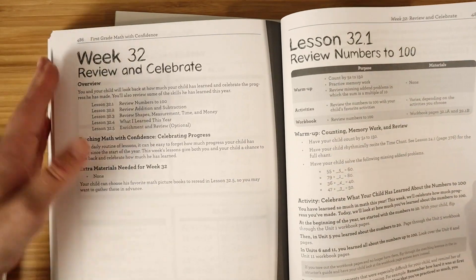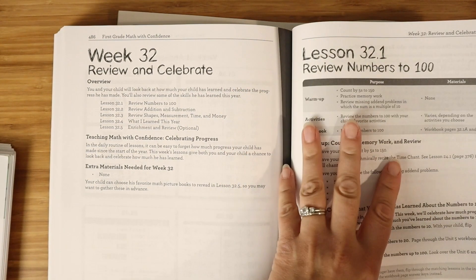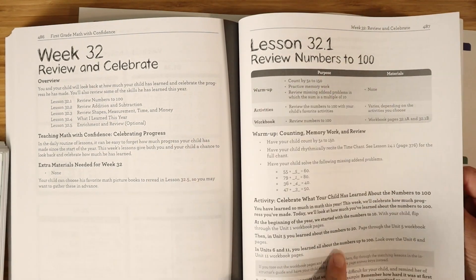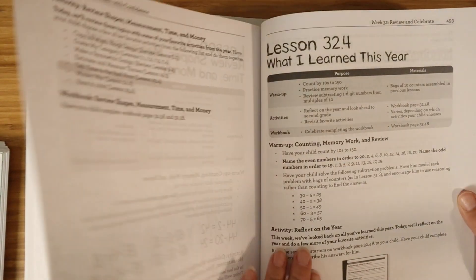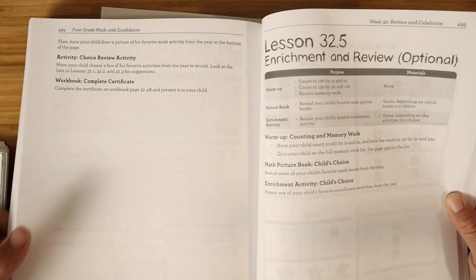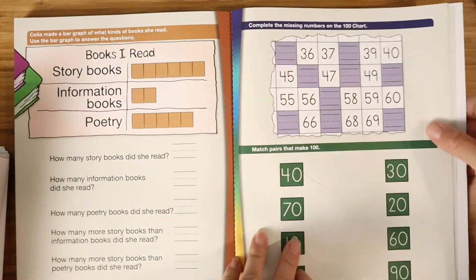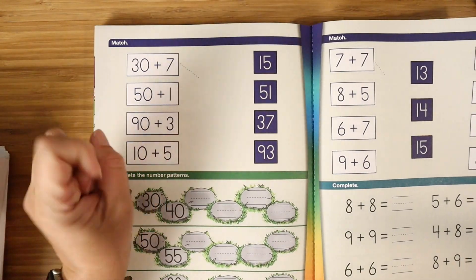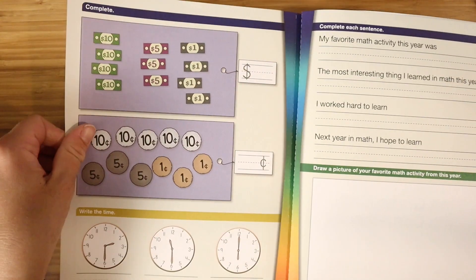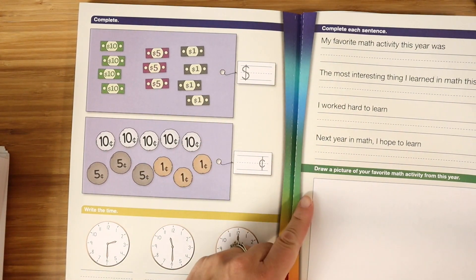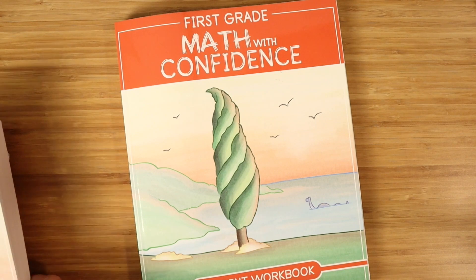One last thing and then we're going to be all done here is the last week of Math with Confidence first grade is review and celebrate. And so each lesson is a different aspect of review for the material that you've learned this year. We have review numbers to 100, review addition and subtraction, review shapes, measurement, time and money. And we have what I learned this year. And then in the book, we have these nice little rainbow pages for your workbook pages at the end for the review. This is a really nice kind of end of the year assessment. If you do a portfolio or a Charlotte Mason style exam, this would be an appropriate thing to pull out and stick in there.